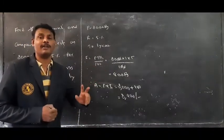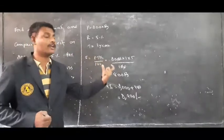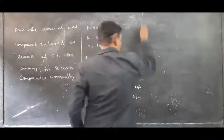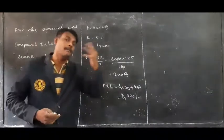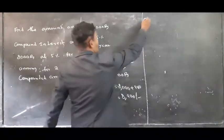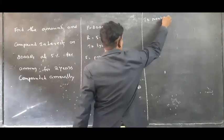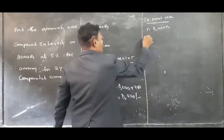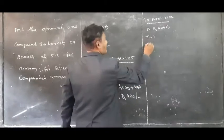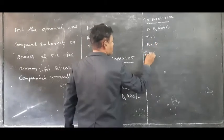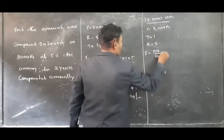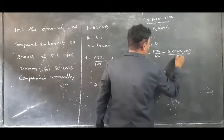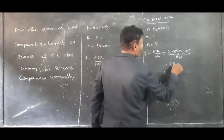But here interest is compounded annually, and the total amount period is 2 years. After one year the compound interest is 400. Now we have to find the compound interest for the next year. The total amount of the first year is nothing but the principal amount of the second year. Principal amount P is equal to 8400 rupees. T is equal to 1 year, R is equal to 5%. I is equal to PTR by 100 equals 8400 into 1 into 5 by 100. Zeros are cancelled. It is 420 rupees.